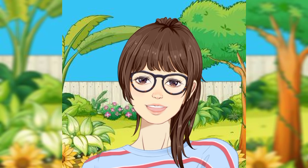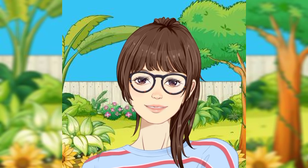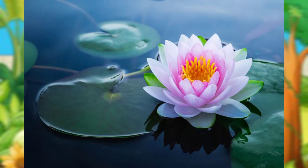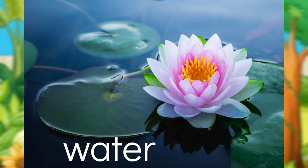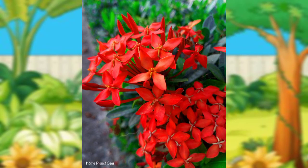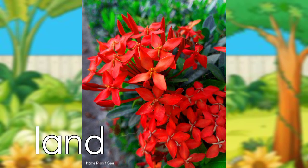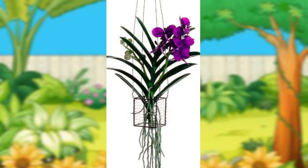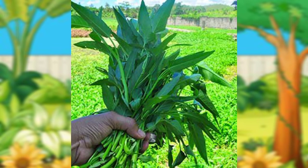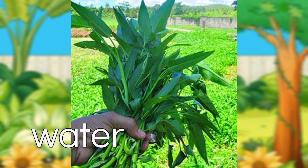Now let's classify plants. Lotus — right, it lives in water. Santan — yes, it lives on land. Orchid — it lives in air. Kangkong — it lives in water.